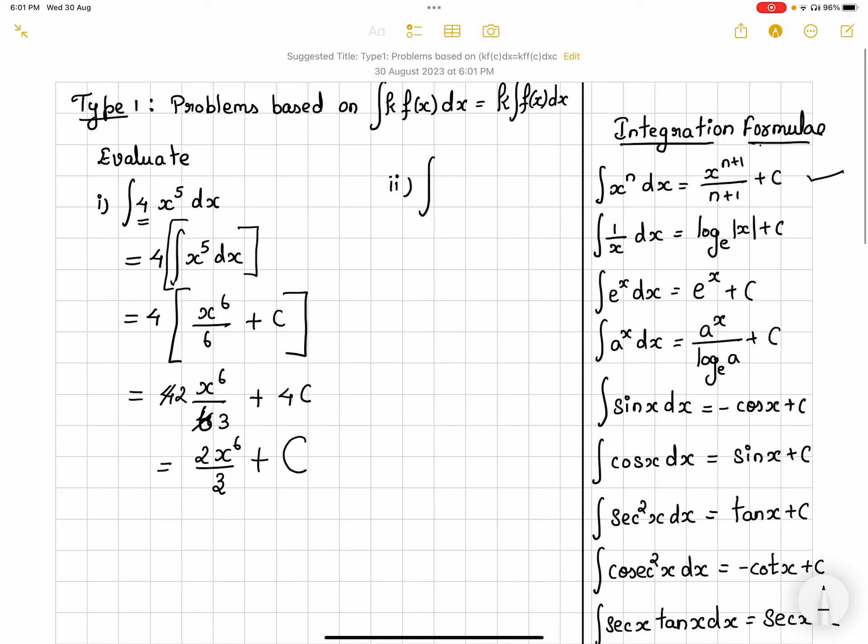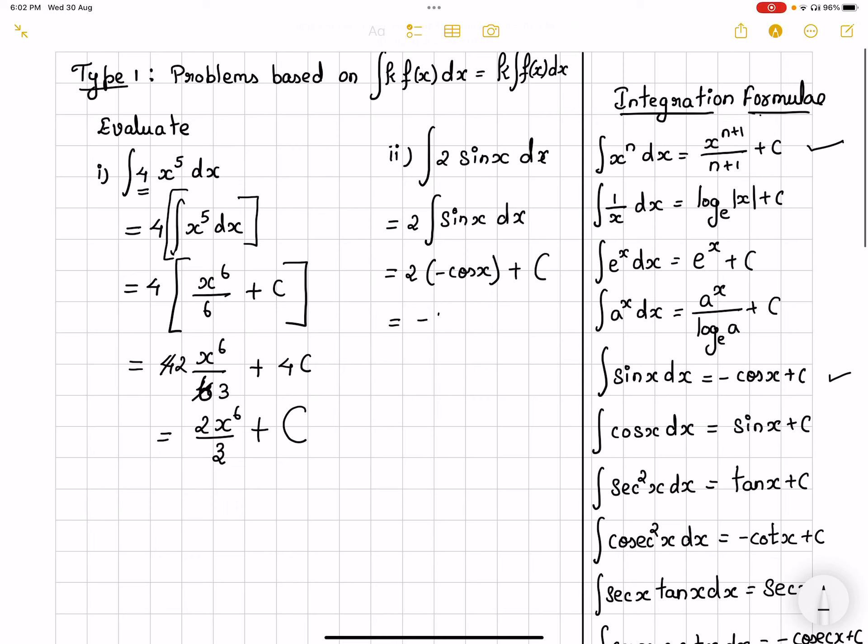We have integral 2 times sin x dx. Now here when I observe, 2 is acting as a constant k and then I would be taking it out and then I would be integrating sin x dx. What is the integration formula of sin x? It's going to be minus cos x plus c. So I would be writing it as 2 times, so it is going to be minus cos x plus c. I can write it directly because it is understood as I told you earlier. It's going to be minus 2 cos x plus c. This is going to be your answer.